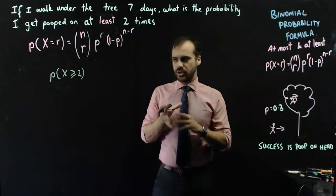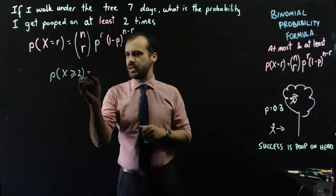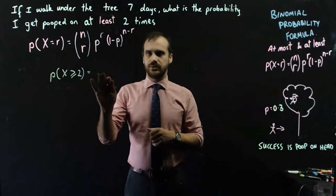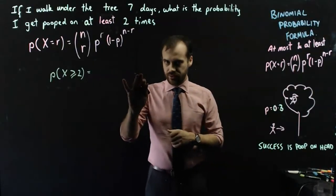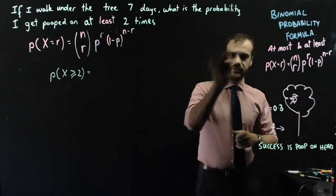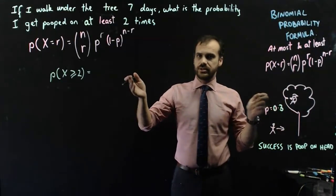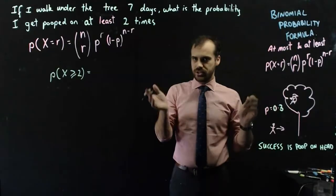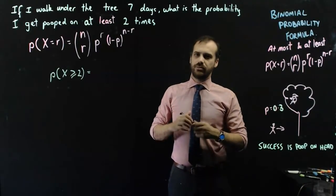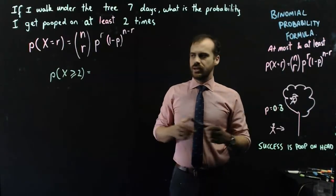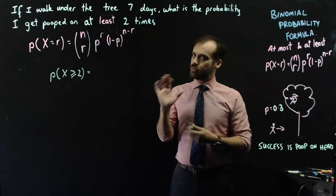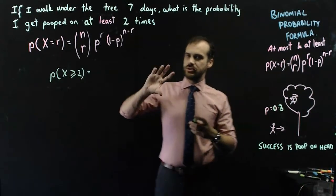Now, you can do this the slow way. You can write this as equals, probability that x equals 2, probability that x equals 3, x equals 4, 5, 6, and 7, and you'd have to do like six of those calculations. That seems really horrible. So what we should do instead is do the reverse.